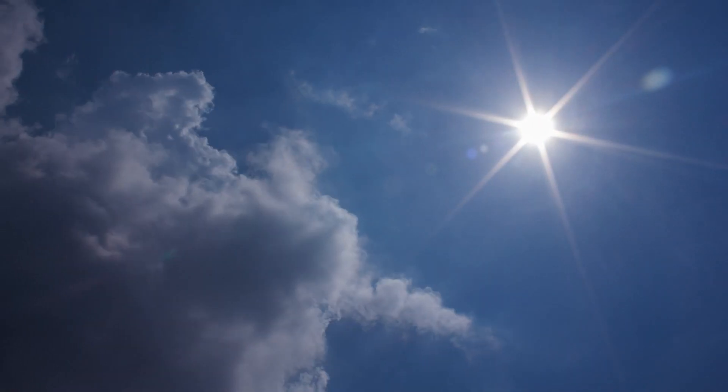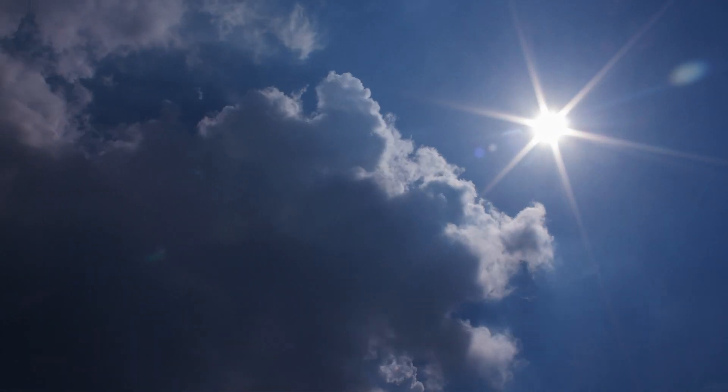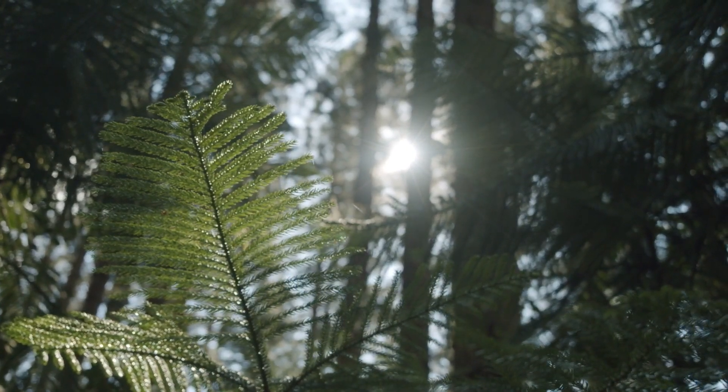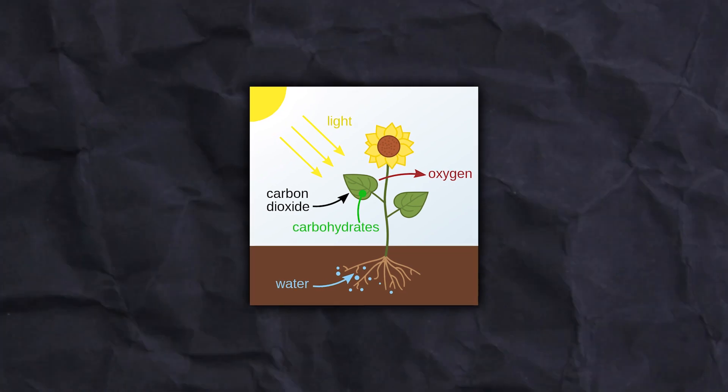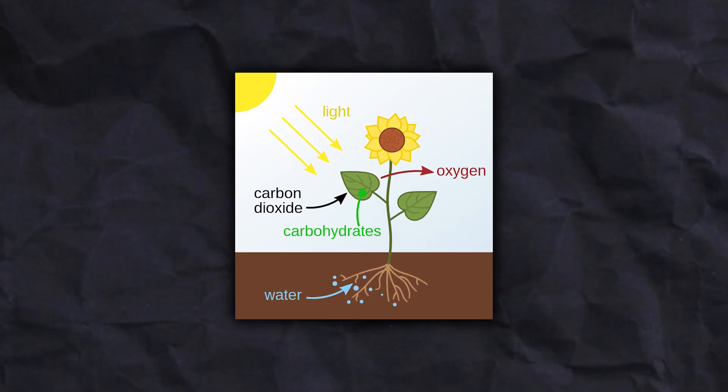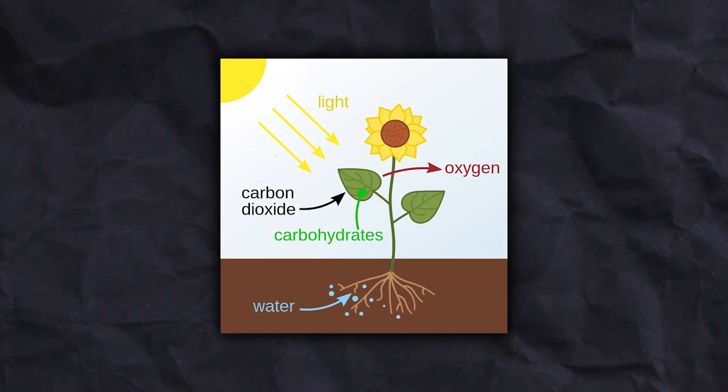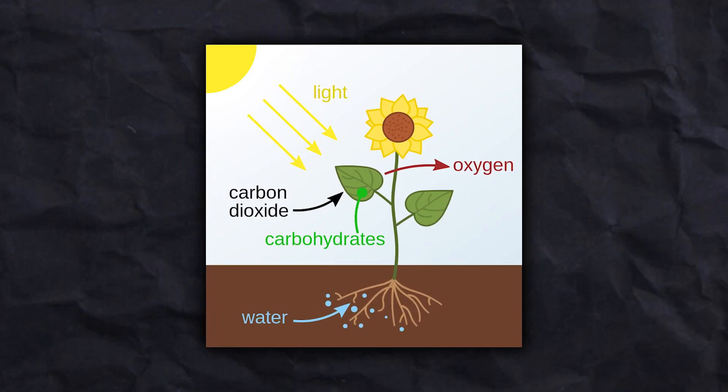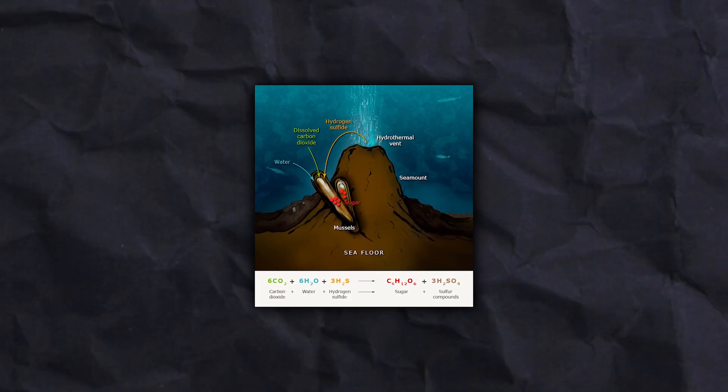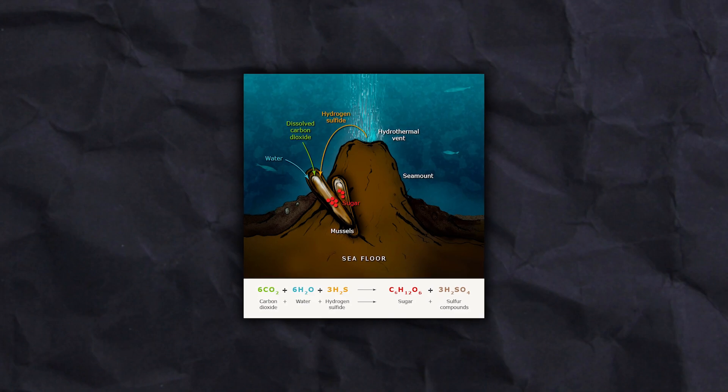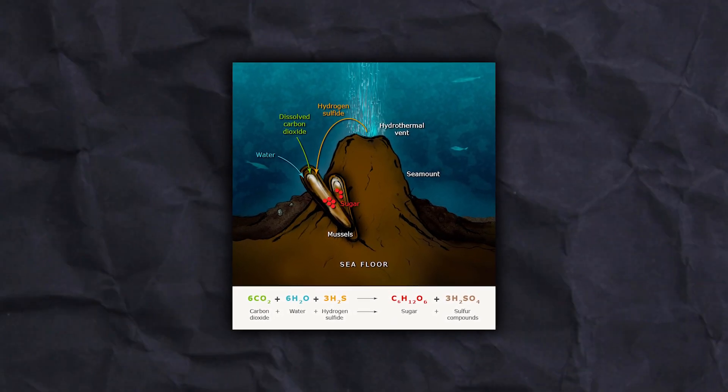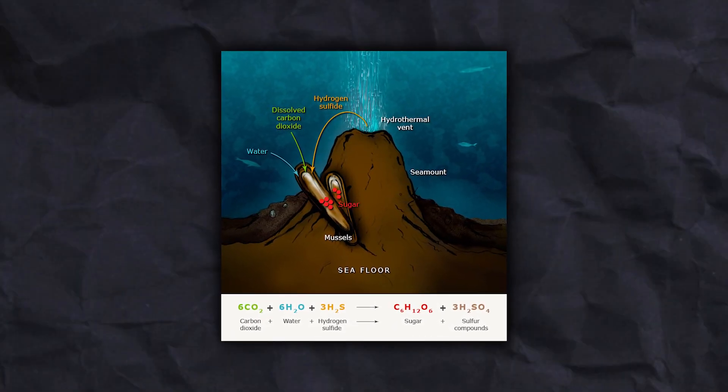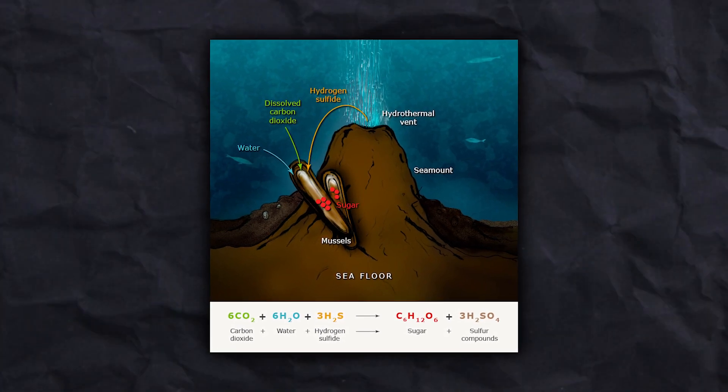Carbon dioxide and water are converted into sugar, food, and oxygen by all photosynthetic organisms using the sun's energy. Chemosynthesis is a process used by bacteria and other organisms to manufacture food using the energy produced during inorganic chemical reactions to create sugar.